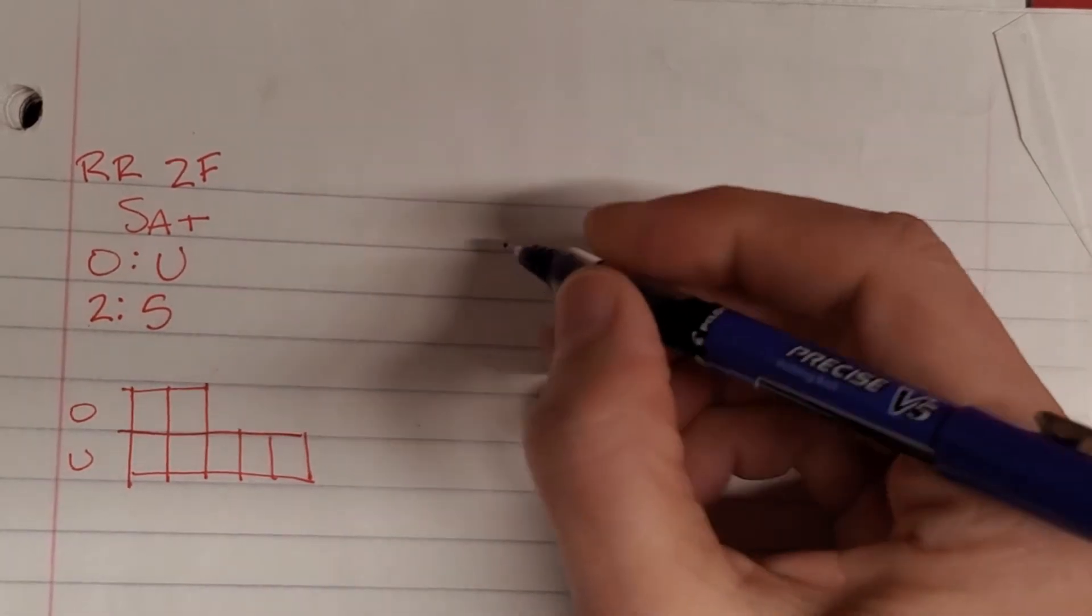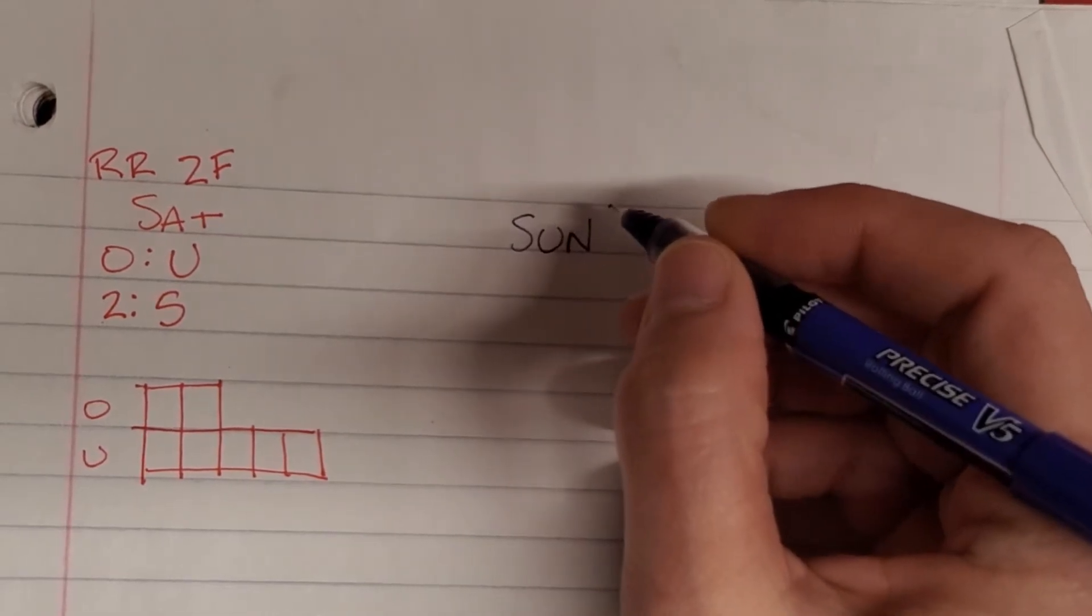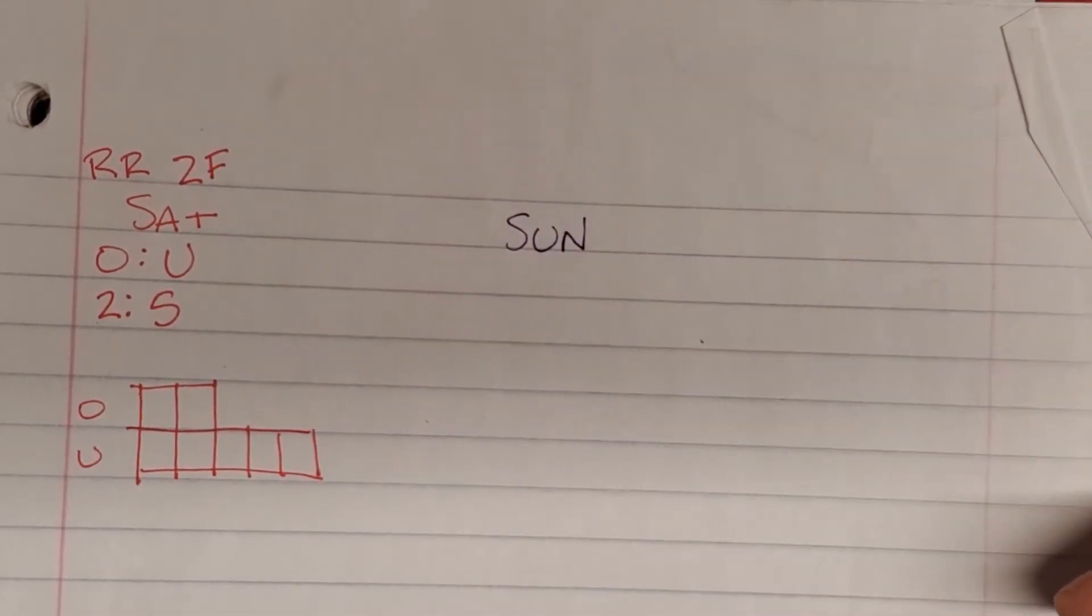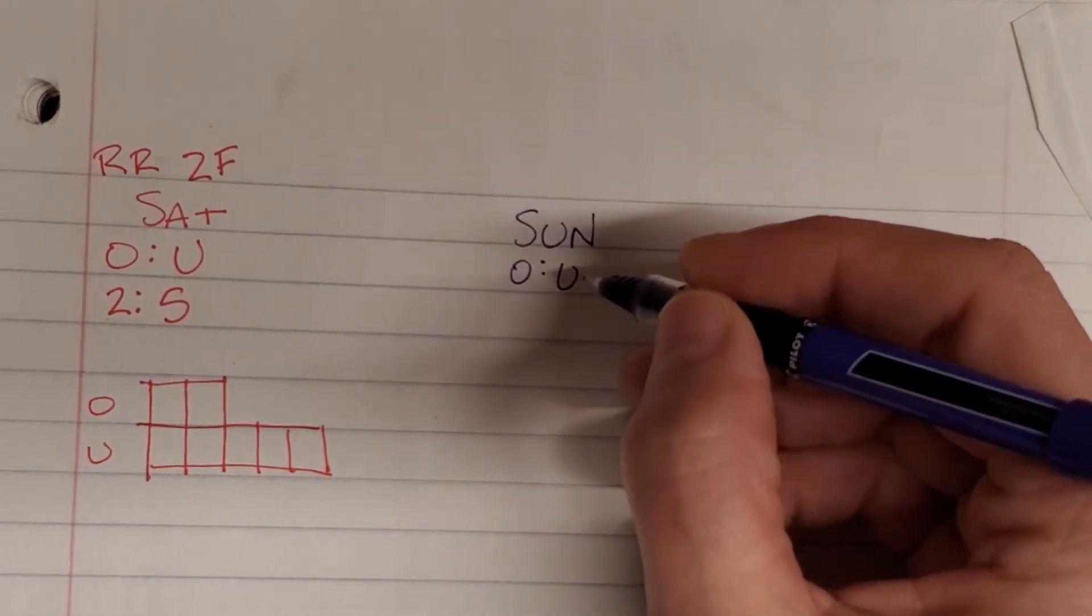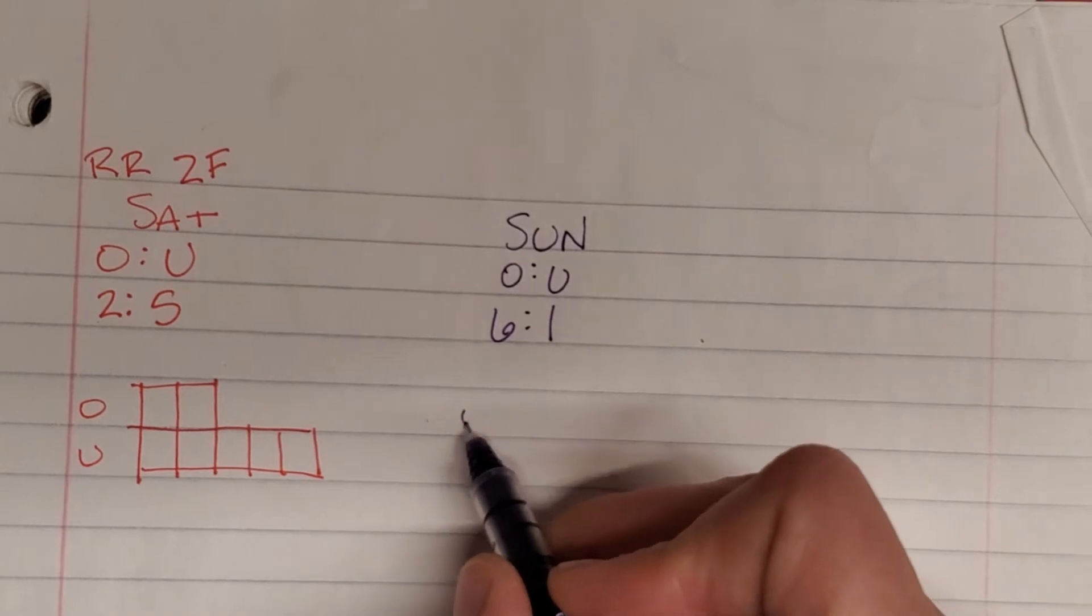However, on Sunday, the ratio of the number of occupied rooms to unoccupied rooms is six to one. Okay, let's draw that.